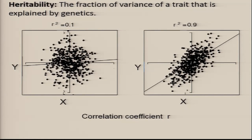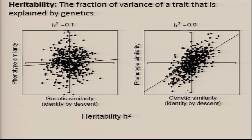You can think about heritability like a correlation coefficient. Correlation is a measure of the relatedness of two variables x and y. The fraction of the variation of one explained by the other is simply r-squared — the correlation coefficient squared. So in one case, x would explain about 10% of y; in another, about 90% of y. Geneticists over 100 years ago adapted this to examine heritability.